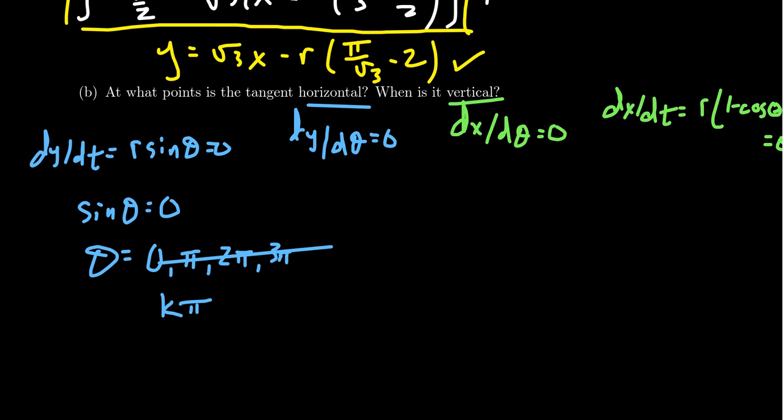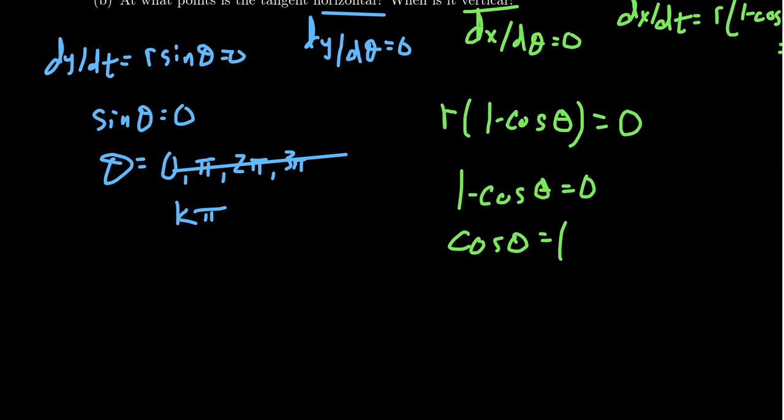And then for the other one, if we have r times 1 minus cosine theta, that should equal 0. Divide both sides by r, we get 1 minus cosine theta equals 0. So we want to know when cosine theta equals 1. When is cosine theta equal 1? That occurs when thinking about our unit circle—cosine starts off at 1. So you get 0, but cosine is equal to 1 not at negative pi, but at 2 pi and 4 pi. So when theta is a multiple of 2 pi, so 2 pi k, that's when you will get vertical lines.